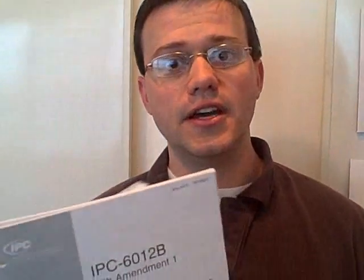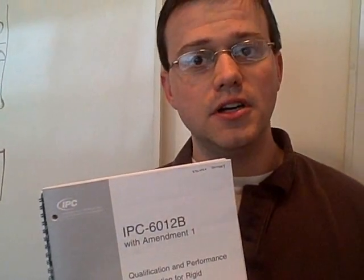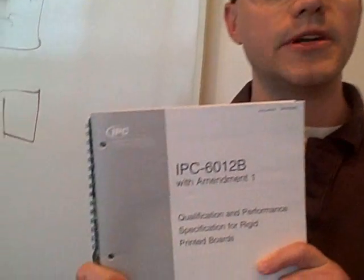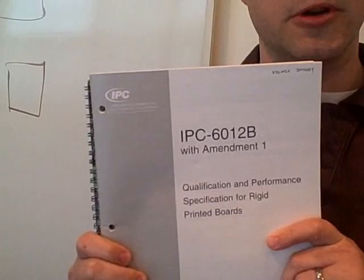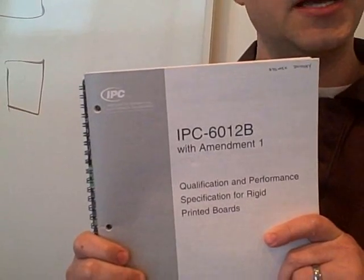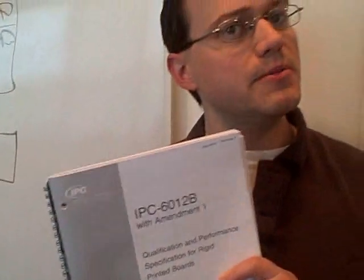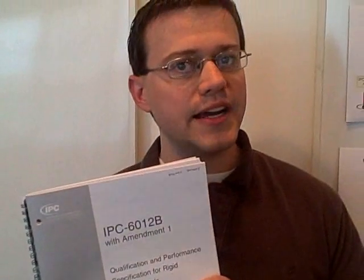What we're going to learn today is how this is really an incorrect way of calling out IPC standards for the fabrication and acceptance of printed boards, and how the correct reference is IPC 6012, which is our qualification and performance specification for rigid printed boards. And this really shouldn't be much of a surprise.